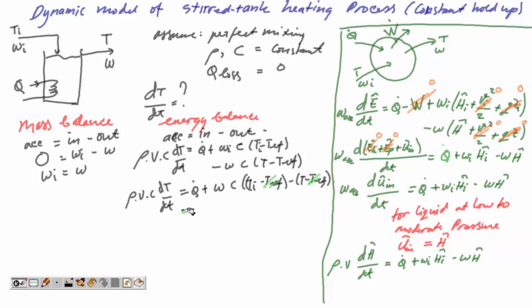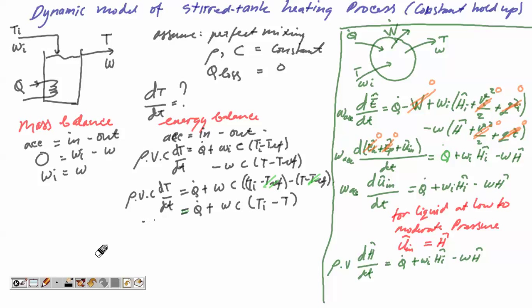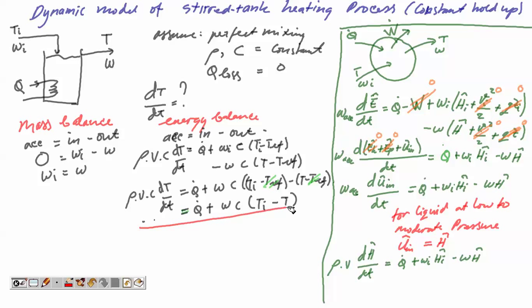So the final dynamic model — the differential equation for this stirred tank heating process — is rho·V·C·dT/dt = Q + W·C·(Ti − T). To solve this equation, we subtract the steady-state condition to obtain the deviation variable form.